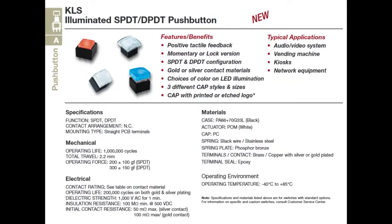The typical applications — this is where I see them. AV systems: whenever you want indicators to turn on or off different settings, folks love to use illuminated switches. These are nice and durable; you want good reliable switches. Vending machines — you can have it lit up, give some feedback when they press the button. Kiosks, network equipment. Consumer and industrial equipment — these are both good for. They're very clicky.